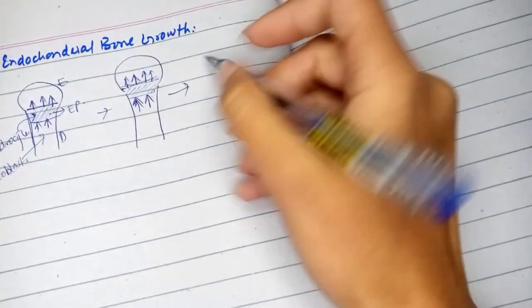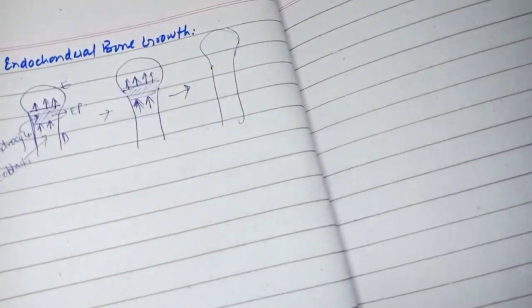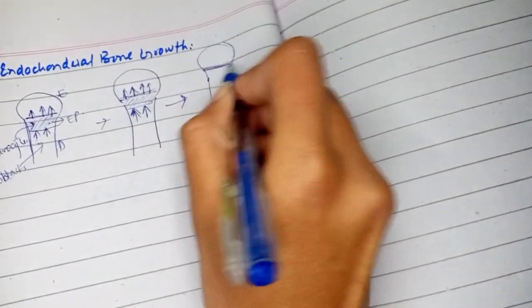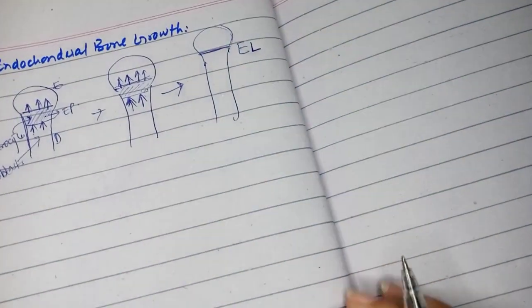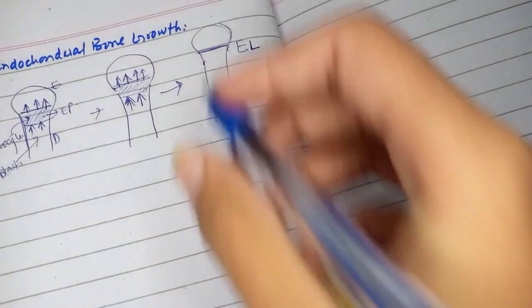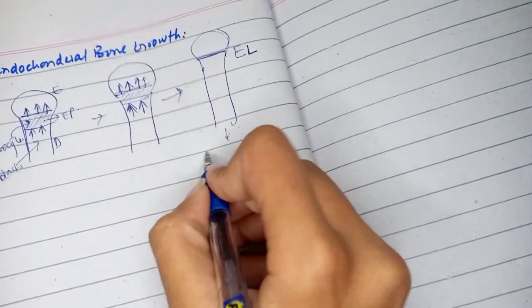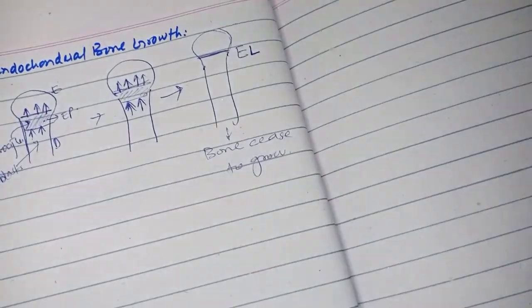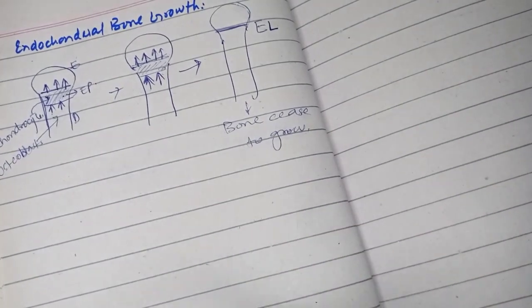At some point in life, this cartilage gets diminished and we are left with only a single line, referred to as the epiphyseal line. This means there is no more cartilage, so the bone stops growing — this is the point where bones cease to grow.